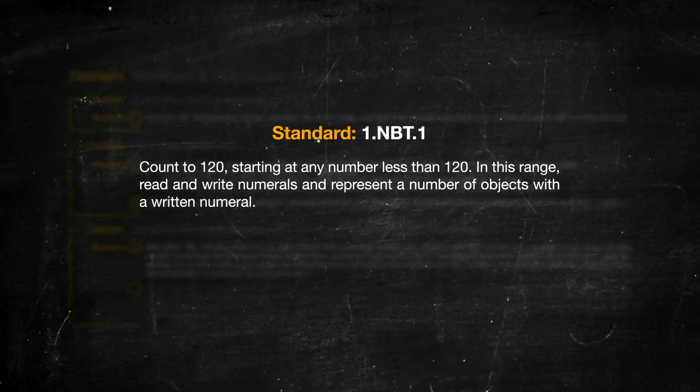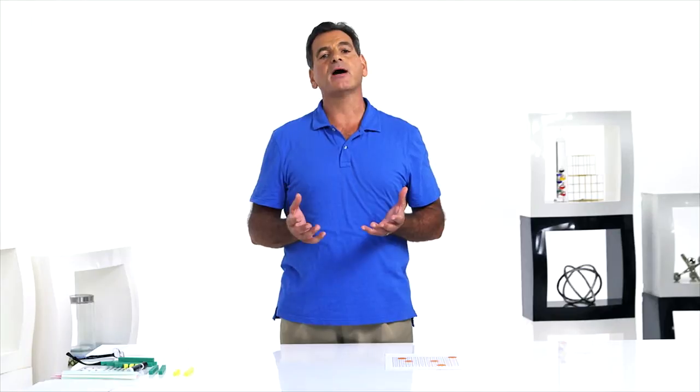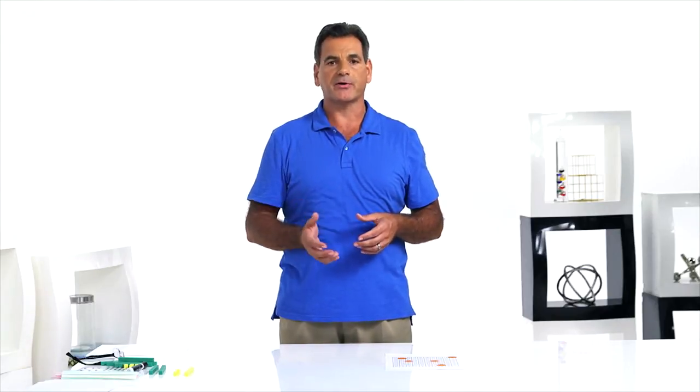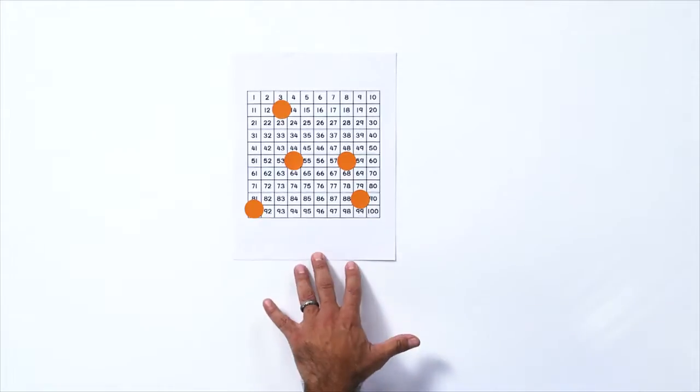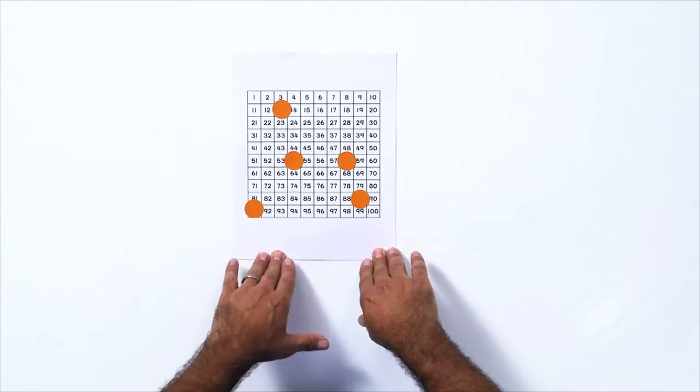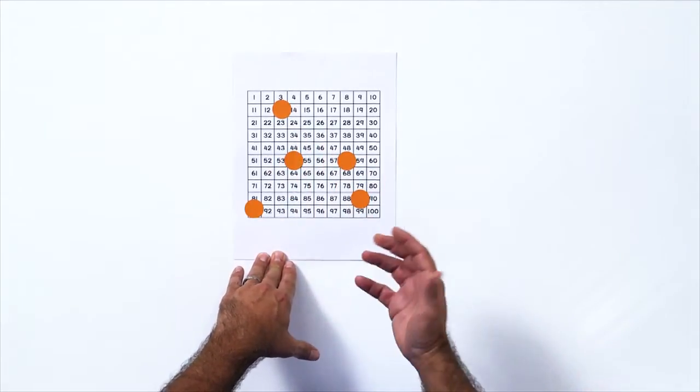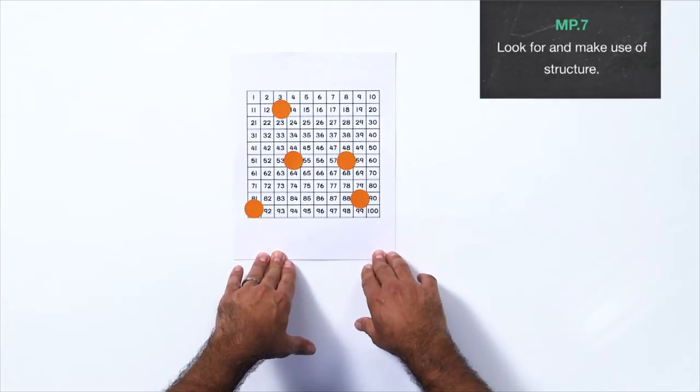In kindergarten, students learn to count to 100 and write numerals to 20. They also learn to count by tens, but only on the decades: ten, twenty, thirty, et cetera. Not fourteen, twenty-four, thirty-four. Pointing to numbers on a hundred chart is a great way for kids to learn to count. Also, blocking out certain numbers and having them determine what they are by looking at the numbers next to them is also effective.